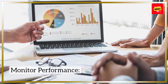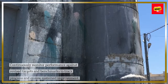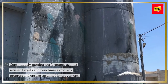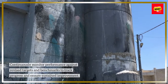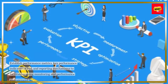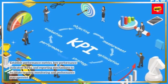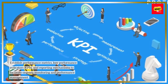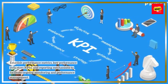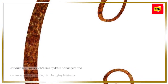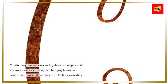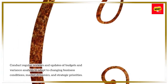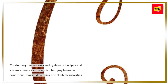Monitor performance. Continuously monitor performance against revised targets and benchmarks to track progress and ensure sustained improvement. Establish performance metrics, key performance indicators (KPIs), and reporting mechanisms to facilitate ongoing monitoring and performance management. Conduct regular reviews and updates of budgets and variance analysis to adapt to changing business conditions, market dynamics, and strategic priorities.